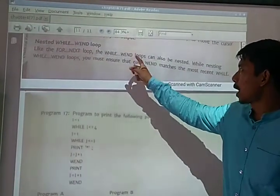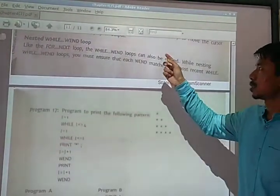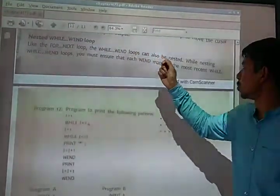Like the for-next loop, the while-wend loop can also be nested, meaning one loop within another loop.